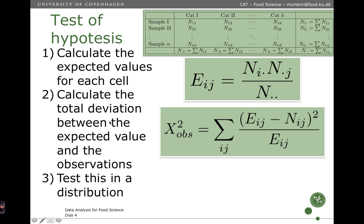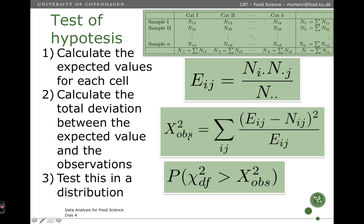Then we want to calculate the deviation from the expected value to the observed data. For each cell, we take the observed value minus the expected value, take the deviation between the two, and we square it. That gives a positive number reflecting how much difference there is between the observed and the expected. Then we scale this by the expected value, do that for all the cells, and sum that measure. We call that x-squared, and that's our test statistic. This we take further to a chi-squared distribution with some degrees of freedom and test whether it's possible under the null hypothesis to observe such a large value as we are observing.